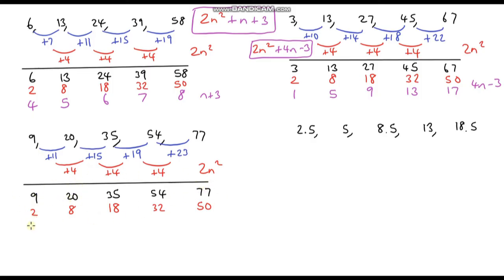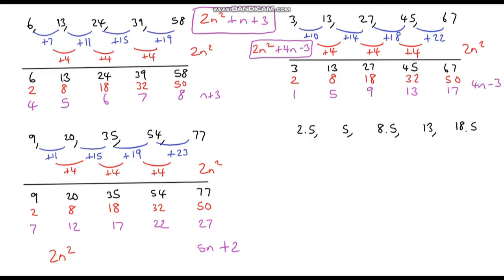Now I subtract my 2n squared sequence from my original sequence to see what I'm left with. 9 minus 2 is 7, 20 minus 8 is 12, 35 minus 18 is 17, 54 minus 32 is 22, and 77 minus 50 is 27. We've got an arithmetic sequence — going up by 5 each time. So it's going to be 5n, and it's 2 above our 5 times table, so it's 5n plus 2. Putting the quadratic and arithmetic parts together, the nth term is 2n squared plus 5n plus 2.